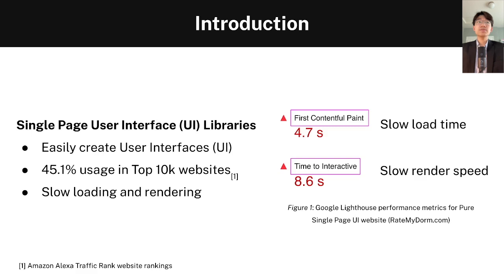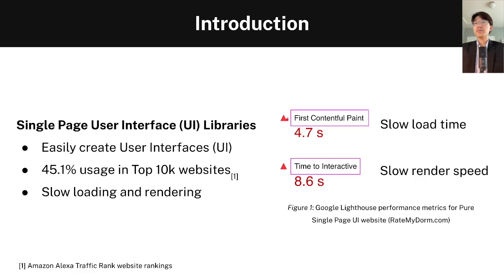The reason why Slack is this slow is because it uses something called a single-page user interface library. These libraries allow developers to easily create user interfaces, which is why their usage is so prevalent in the top 10,000 websites on the internet. However, these libraries cause slow loading times and slow rendering times. We can see this with RateMyDorm.com — the First Contentful Paint, which measures loading time, is roughly 5 seconds, while the Time to Interactive, which measures render speed, takes almost 9 seconds.